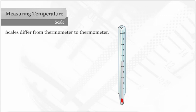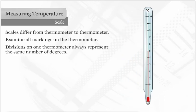In order to read a temperature correctly, examine all markings on the thermometer. The divisions on one thermometer always represent the same number of degrees.